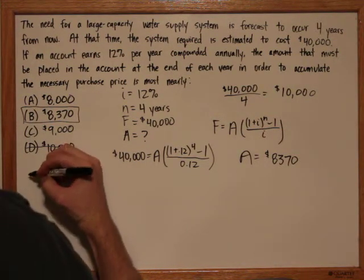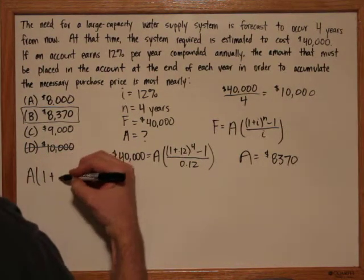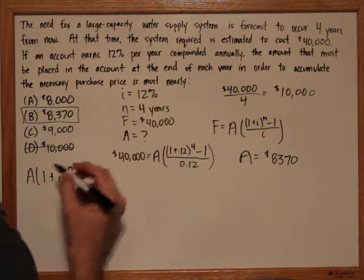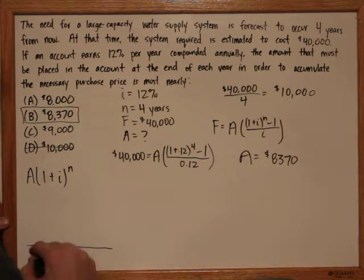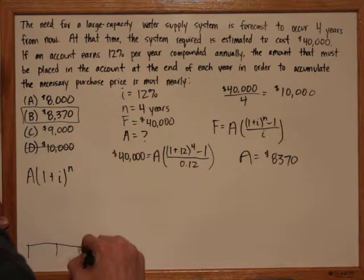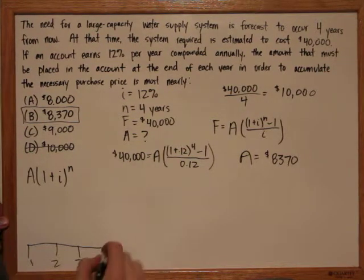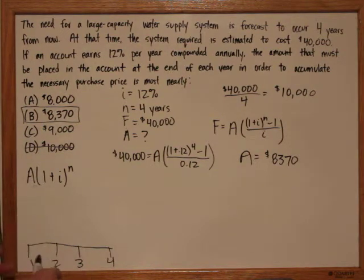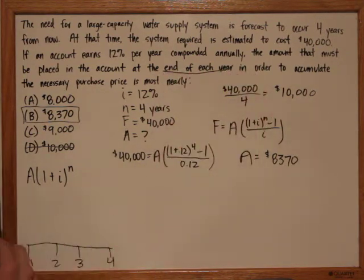So to do that, we use the formula A is one plus the interest rate, raised to the amount of times that it's compounded. In this problem, we have four years, meaning we also have four payments. And your first payment in year one will be made at the end of the year. And because it's made at the end of the year, it will be compounded in year two, three and four.